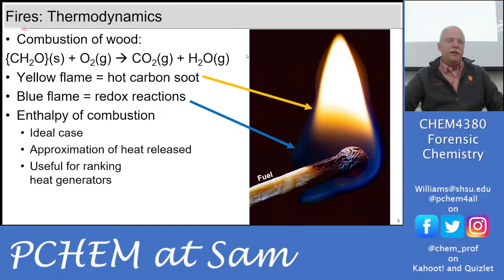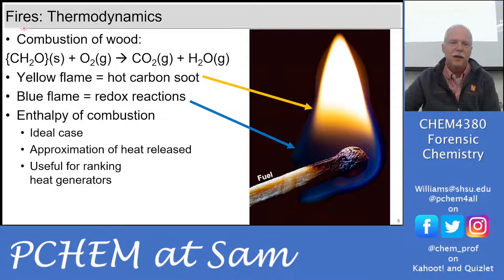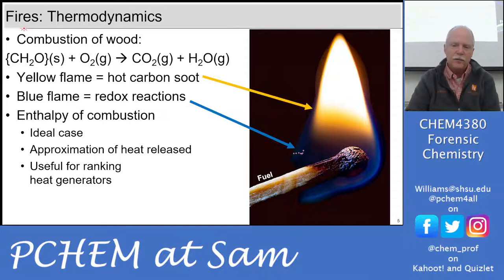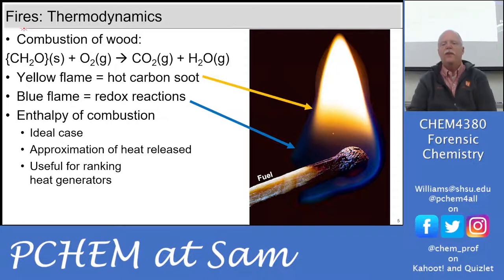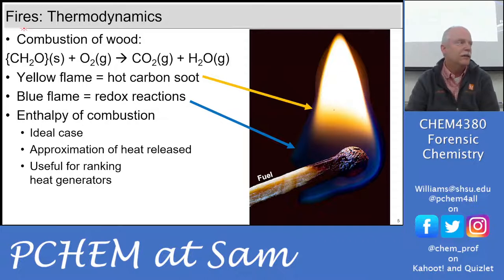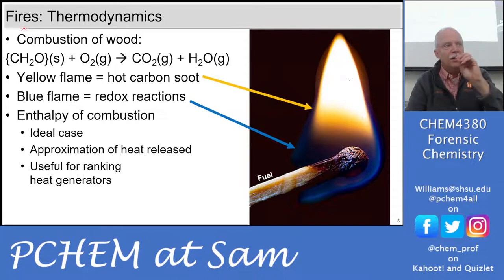In wood combustion — a carbohydrate with generic formula CH2O — you see a blue flame from hydroxyl radical redox reactions and orange/yellow from unreacted hot carbon (black-body radiation). Partial burning produces sooty yellow flame; complete combustion shows only blue. On a Bunsen burner tuned correctly, you see only blue because all carbon is burning completely.